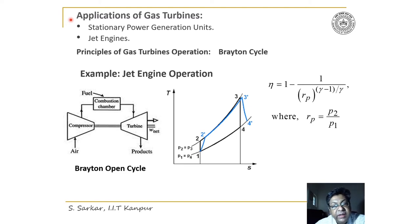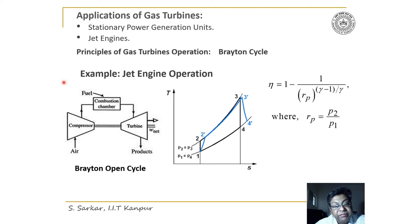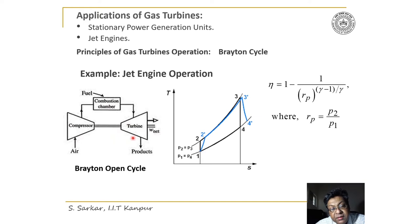Gas turbines are used in stationary power generation units and jet engines. The Brayton cycle is the operating cycle for a gas turbine. The closed cycle is used for power generation units, while the open cycle is used for jet engines. I have shown here the schematic of the open cycle, where this is the compressor, combustion chamber, and the turbine.